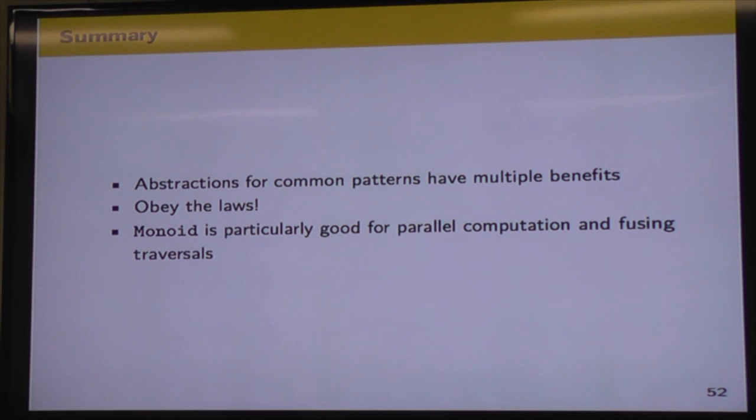So that's it for monoids. We've seen that we've got some abstractions for common patterns. They've got some benefits that are real-world benefits that we can use in our programs. I probably didn't stress it enough in the talk but obey the laws. We need those laws to protect us and make sure that our programs do what we think they're going to do. And we looked at some examples of how monoids are particularly good for parallel computation and fusing traversals to make things more efficient. And that's it.